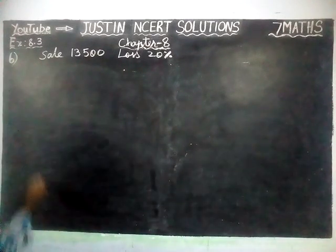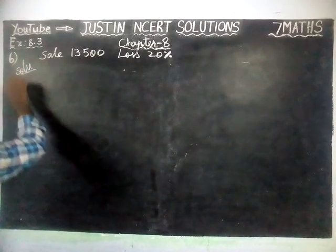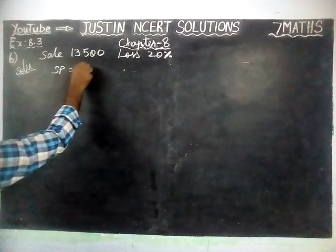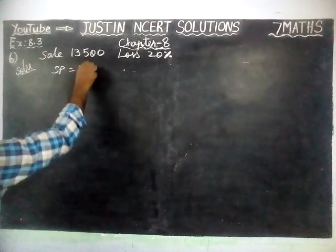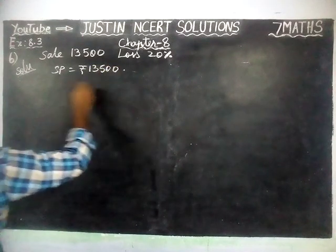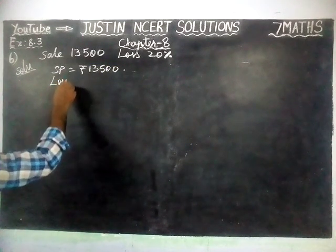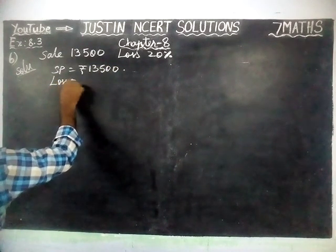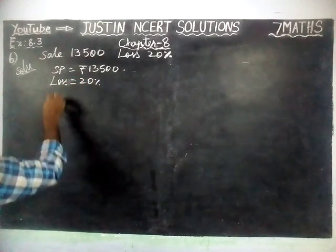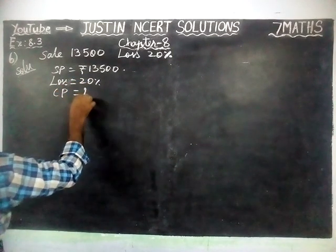First we will write the given information. Here they have given: Sale Price is equal to Rs. 13,500. Loss is equal to 20%. Cost price we don't know.